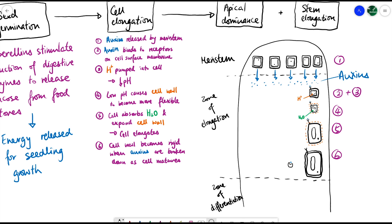To summarize cell elongation: auxins are released by the meristems at the tip of the shoot; the auxins bind to receptors on cell surface membranes of cells below; this causes protons or hydrogen ions to be pumped into the cell, lowering the pH; the low pH makes the cell wall more flexible so when the cell absorbs water it expands; eventually, as the cell matures, the auxins are removed and broken down by enzymes, the cell wall becomes rigid again, and elongation stops.